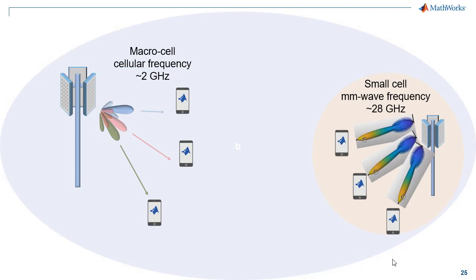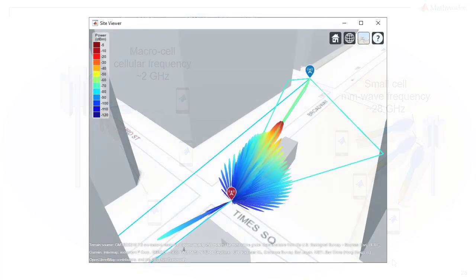RF transmissions at millimeter wave are part of the 5G standard. At these frequencies, due to path loss, the signal power drops quickly and the range of transmission is substantially reduced. As a result, millimeter wave transmissions usually leverage large antenna arrays, together with beamforming, to boost signal power.